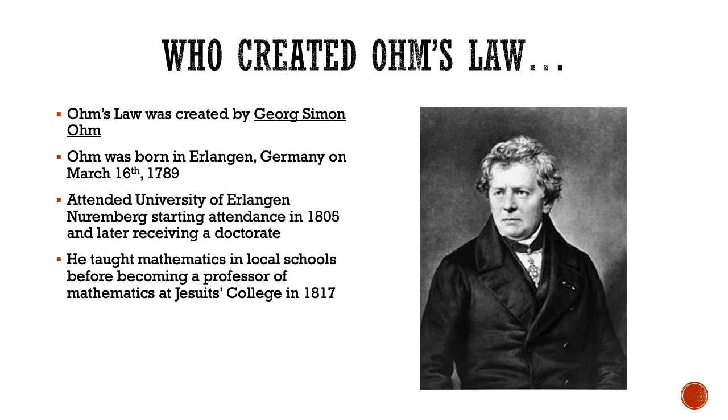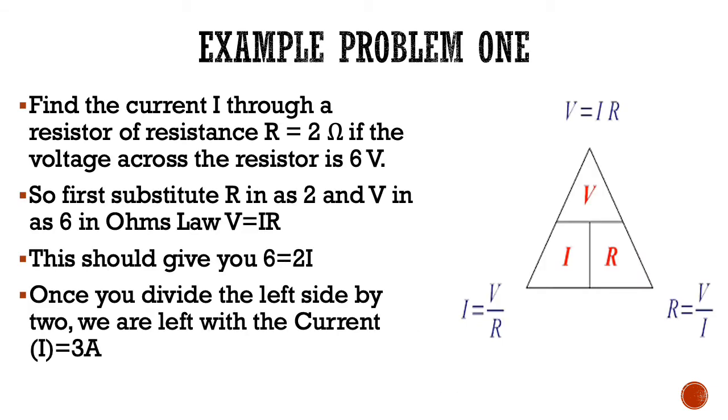Example problem one: Find the current I through a resistor of resistance R equals 2 ohms if the voltage across the resistor is 6 volts. First, we're going to substitute R in as 2 and V in as 6 in our Ohm's law equation V equals IR. This should give us 6 equals 2I. To solve for I, we're going to divide 6 by 2, leaving us I equals 3A, which means that current equals 3 amps. A good tool here is the picture on the left with a triangle showing our different equations that you can remember when solving this problem.